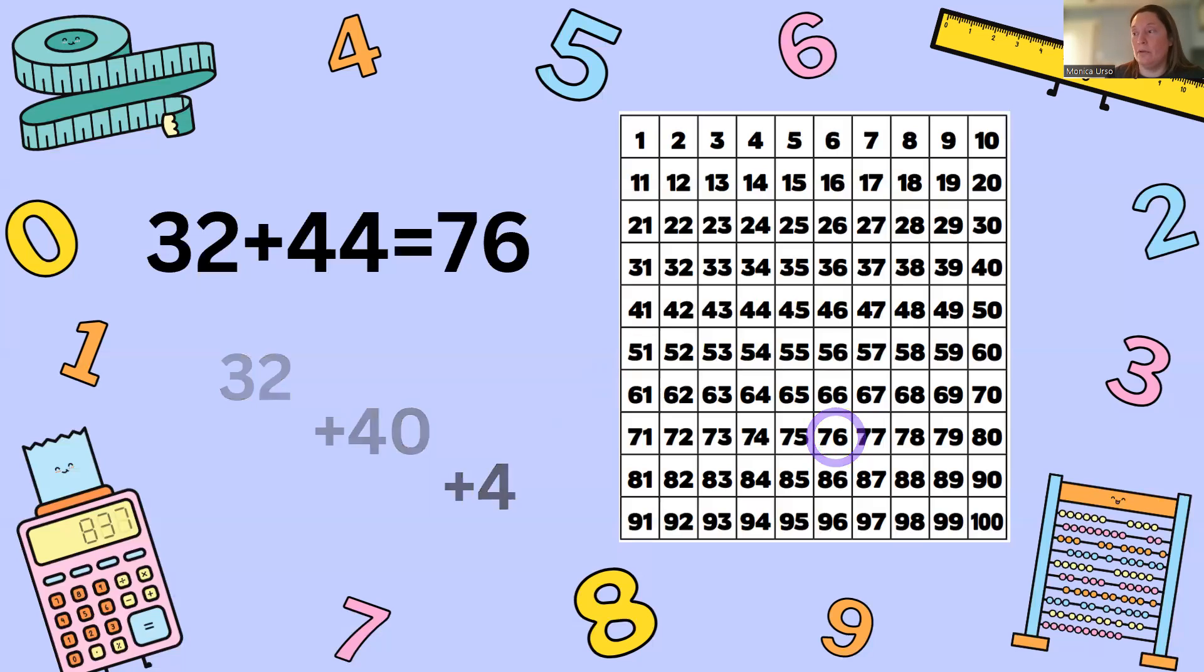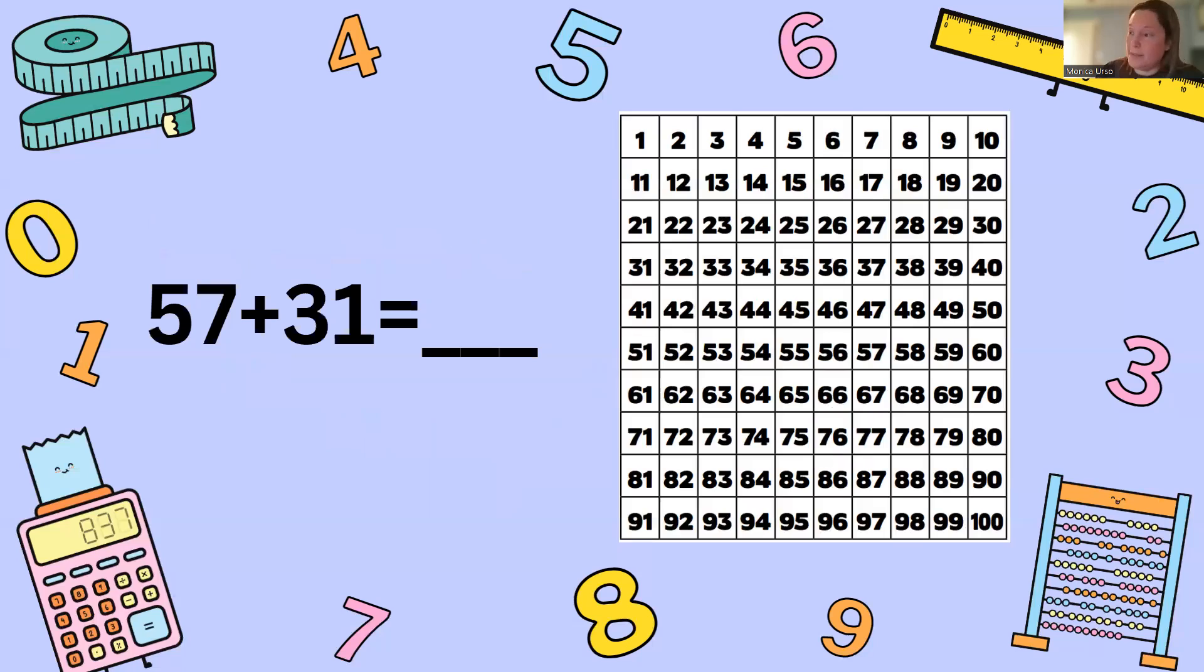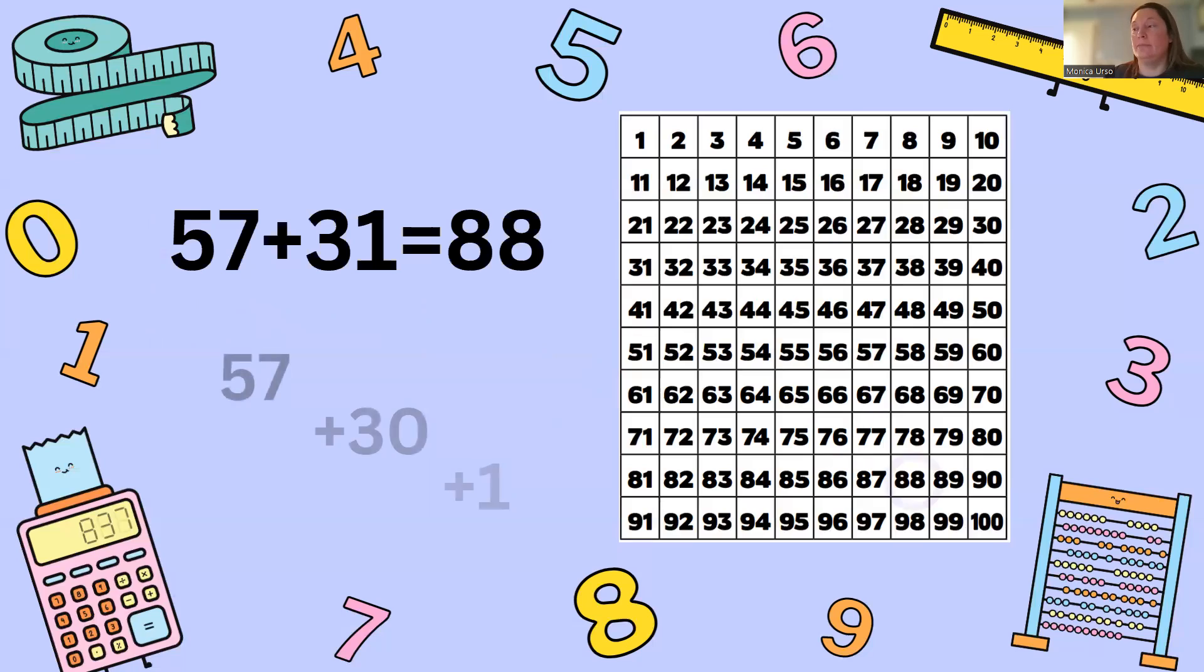Okay our next practice problem is getting a little bit harder now, we're going to do 57 plus 31. So go ahead and hit pause and hit play when you're ready to find your answer. So for this we start at 57, we move down three to add 30, 10, 20, 30 and we move to the right one so we get our answer of 88.